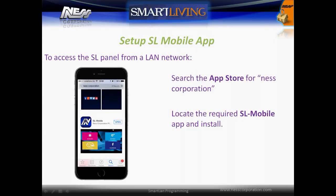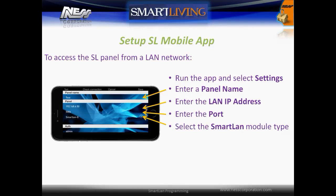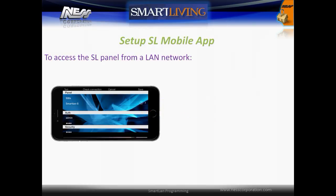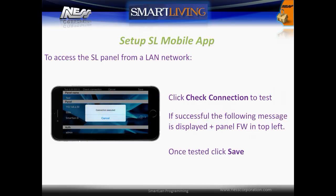Search the app store for Nest Corporation, locate the required SL Mobile app, and install it. Run the app and then select Settings. Enter a panel name, IP address of the panel, the port number, and the Smart LAN module type. Scroll down and enter the username, password, and user code. At the top of the screen, click Check Connection to test. If the test is successful, a message will be displayed showing the firmware version of the panel in the top left-hand corner. Cancel this message and then click Save.